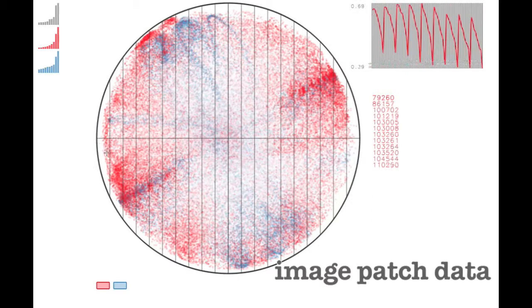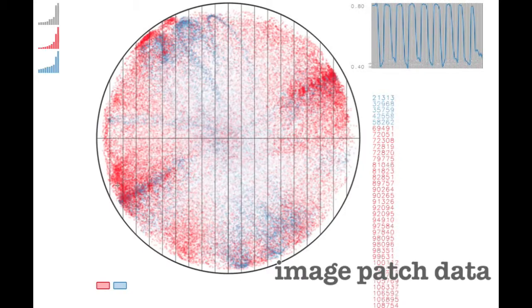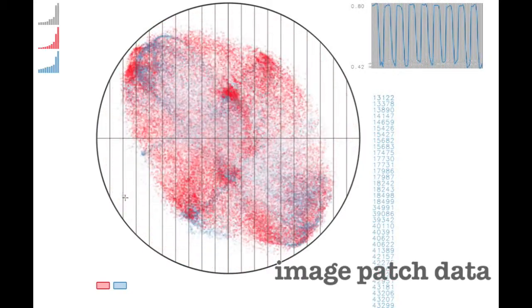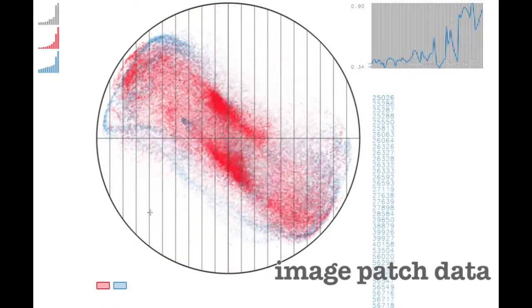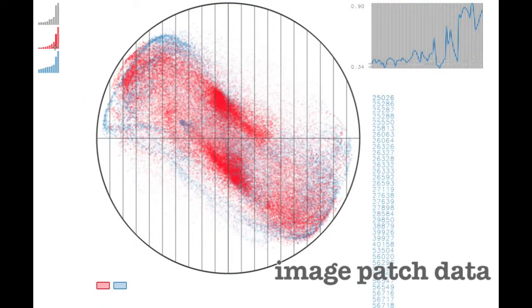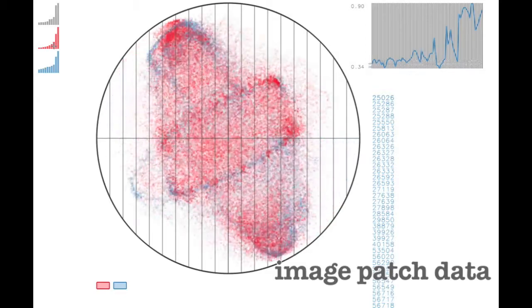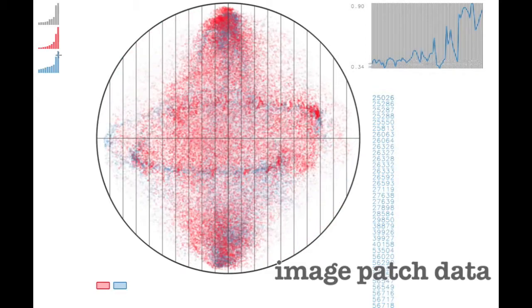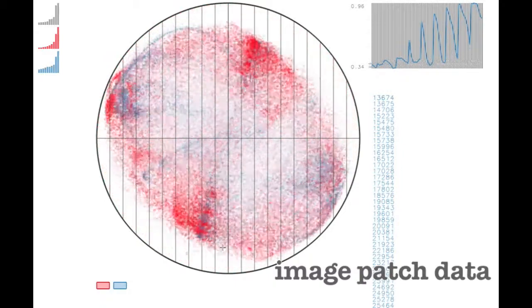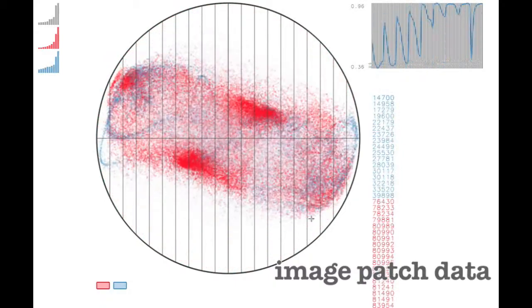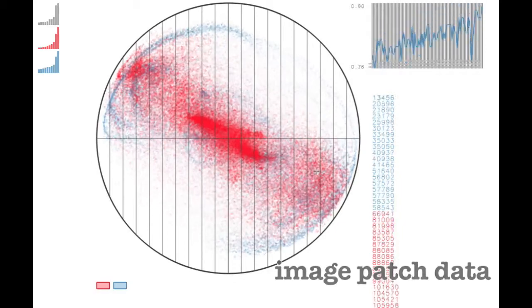The user can interactively define new projections of the data by either selecting new variables of interest in the plot, or by selecting other data-driven projections like principal components. Animated transitions show the reorientation of the projection plane and enable a richer understanding of multidimensional structures in the data.